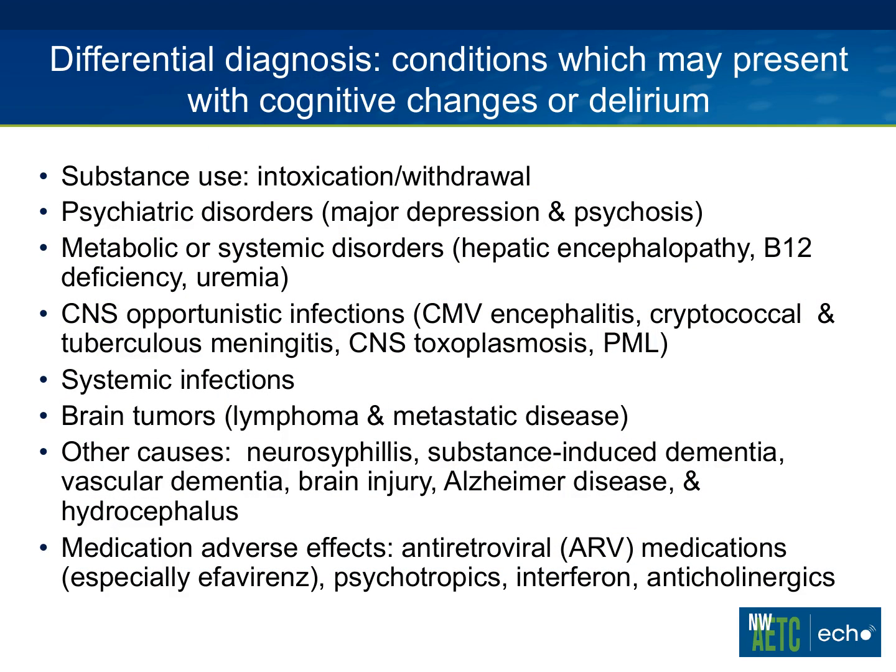When we're talking about HIV and cognitive deficits, we always worry about opportunistic infections, but there are other things we really have to rule out that can also present with cognitive changes or delirium. That includes substance use — both intoxication and withdrawal-induced delirium or cognitive disorders — as well as psychiatric disorders, specifically major depression and psychosis. Bipolar disorder can also present with some cognitive changes and delirium. And then there are metabolic and systemic disorders such as B12 deficiency, uremia, and hepatic encephalopathy.